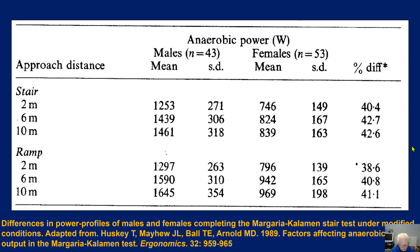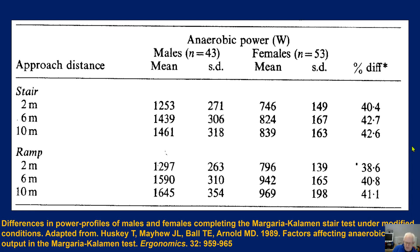Using a ramp removes the stepping issue and is perhaps safer — safety is a concern with running up flat stairs. But looking at the data, as soon as you add a ramp, variability increases quite dramatically. So although it's safer, is it actually better? And the key question remains: is it really measuring power? Of course, it's still only estimating power. Why 12 steps? Why not three or four? All the issues around step height consistency have significant ramifications for our power estimation.